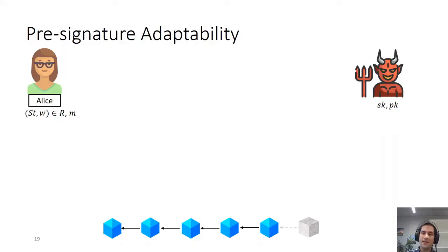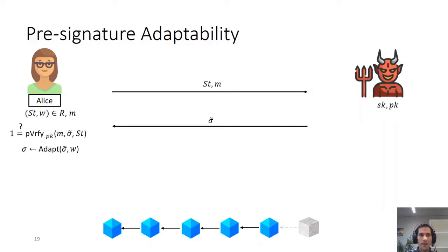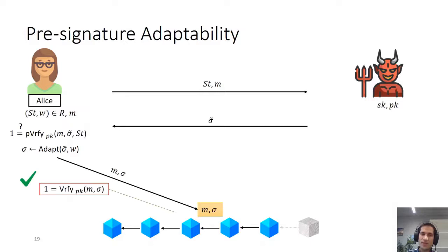Pre-signature adaptability states that if Alice is honest and sends her statement and message to a malicious Bob who somehow produces a pre-signature, if the pre-verify algorithm returns one on that pre-signature, then Alice would be able to adapt it into a valid full signature. In other words, if pre-verify returns one regardless of the adversary's strategy, Alice would be able to adapt this pre-signature to a full signature.